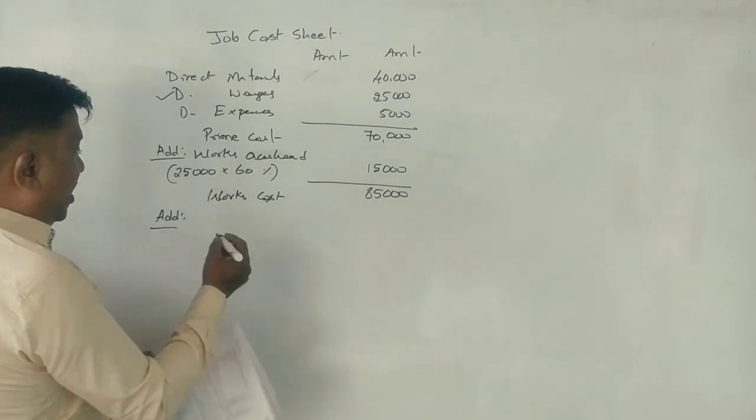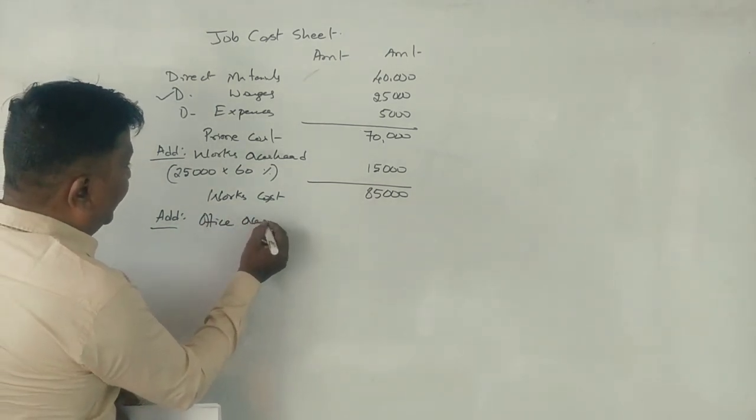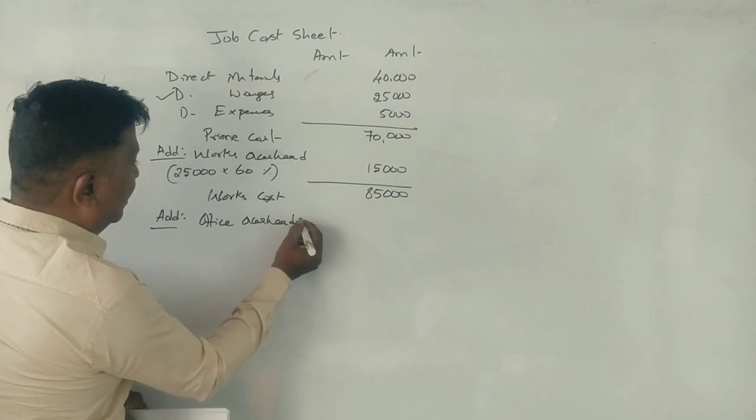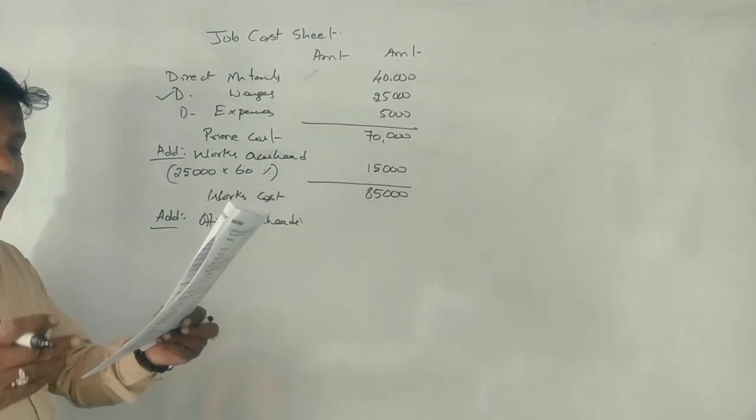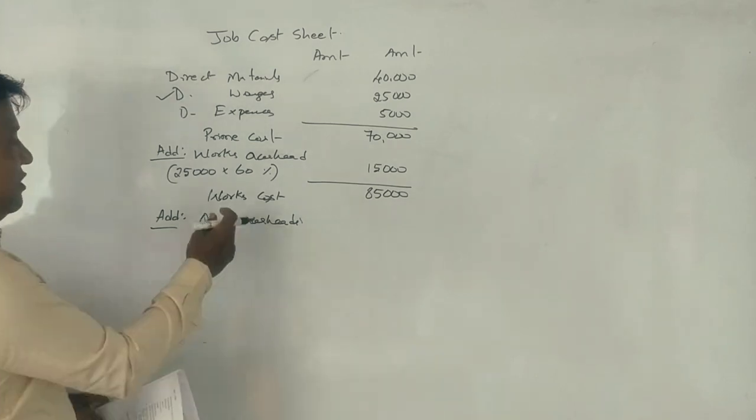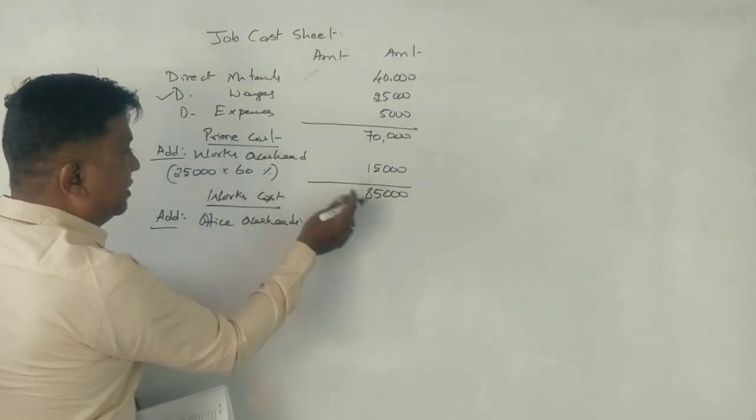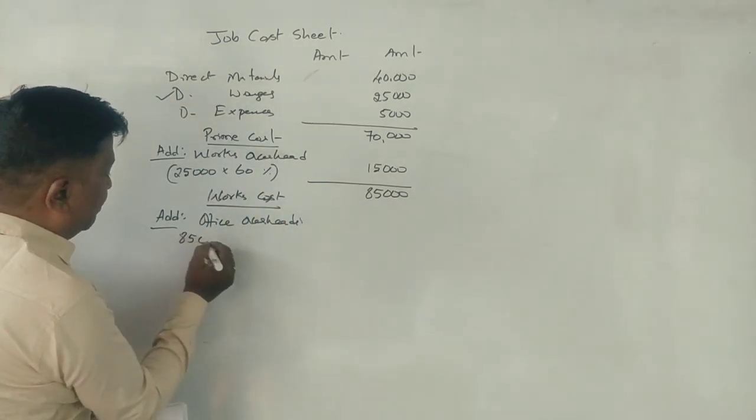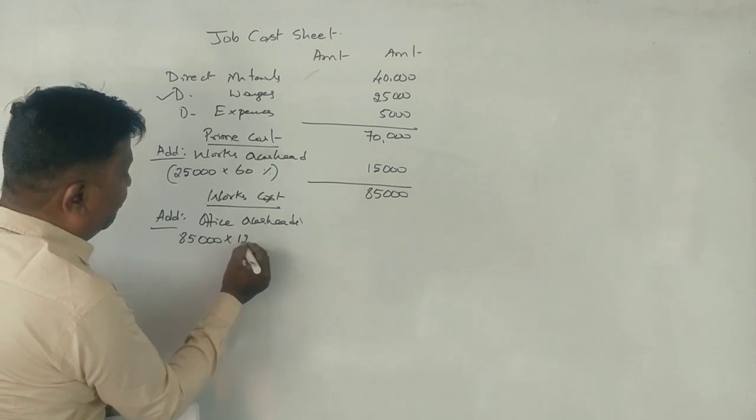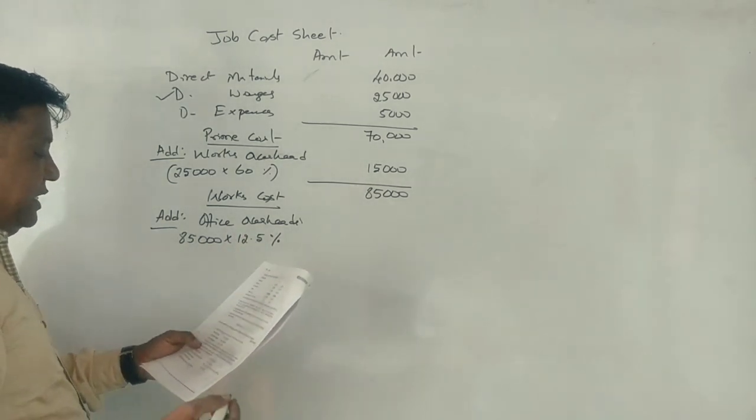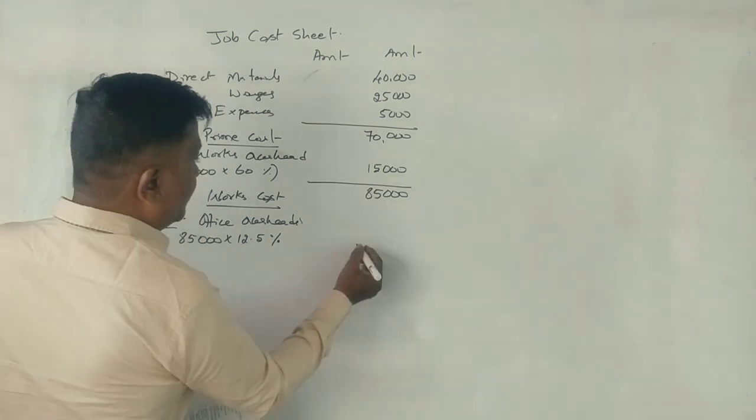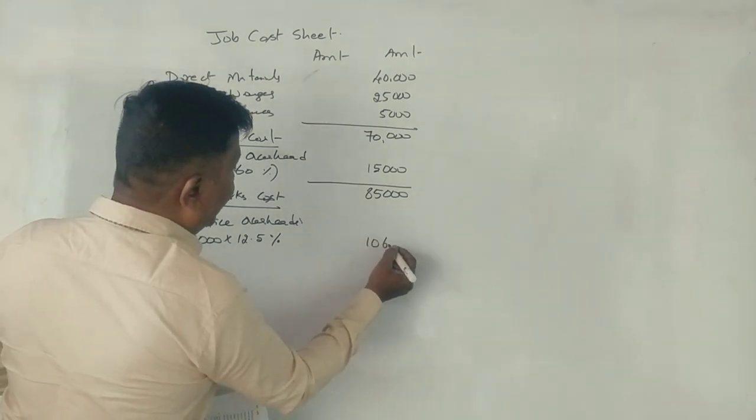Now, we have 12.5% of works cost. Works cost is 85,000, and we have 12.5% of works cost is 10,625.